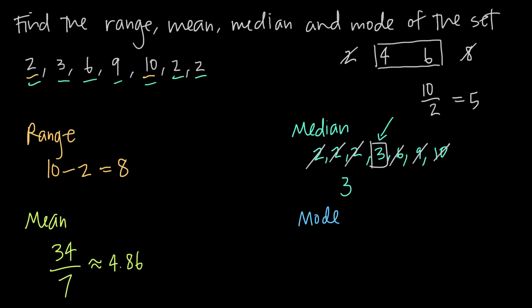Coming back now to our problem, the last thing we need to find is mode, and mode is one of the easiest ones. It's just the number that occurs most often in the given set. In our case, that's going to be 2, because 2 occurs 3 times. 3 only occurs once, 6 occurs once, 9 occurs once, and 10 occurs once. That means that 2 occurs the most times out of the numbers in this set, so the mode of the set is 2.